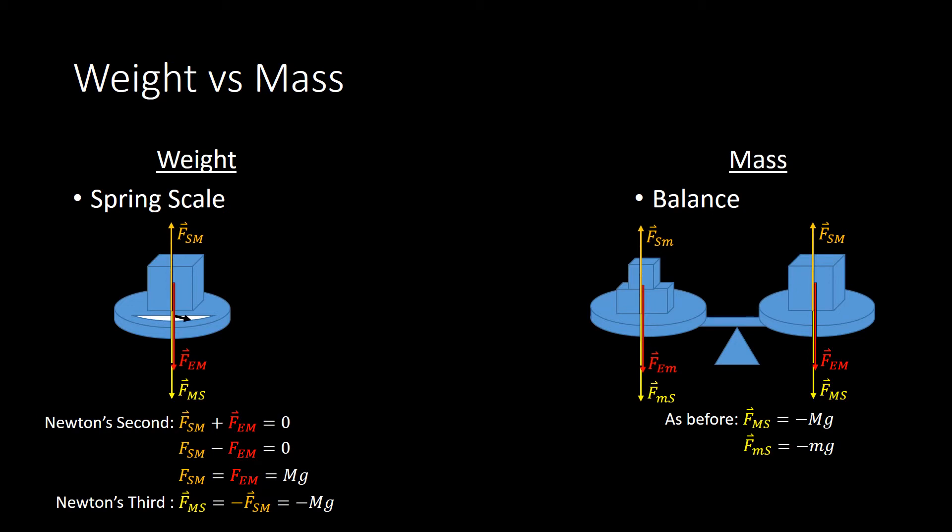Now, we haven't yet learned about rotational motion. We'll eventually teach you and explain where this comes from. But for now, accept that in order for this thing to not rotate, for the pan to not tip, those two forces that are being exerted on the pan must be equal.